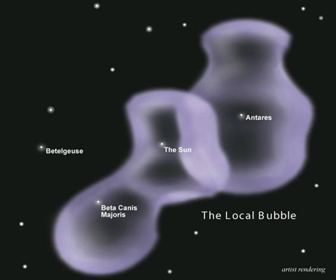The loop-I bubble was cleared, heated, and maintained by supernovae and stellar winds in the Scorpius-Centaurus Association, some 500 light-years from the Sun. The loop-I bubble contains the star Antares, also known as Alpha Scorpii, as shown on the diagram above right. Several tunnels connect the cavities of the local bubble with the loop-I bubble. Other bubbles adjacent to the local bubble are the loop-II bubble and the loop-III bubble.